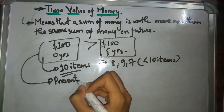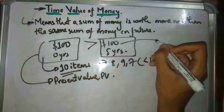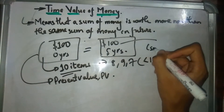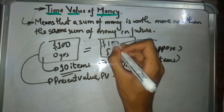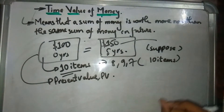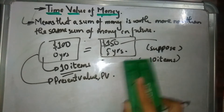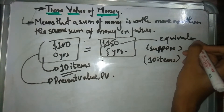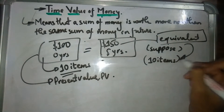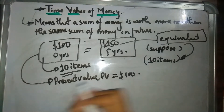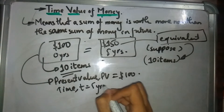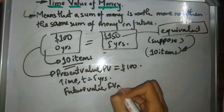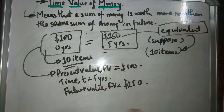At time t = 0, this is known as our present value, PV. In five years' time — let's suppose the $100 is going to be equal to $150, with which you can buy the same 10 items. They are not equal in dollar terms, but they are equivalent. So we can say the present value of $100 at t = 0 is equivalent to a future value, FV, of $150 at t = 5 years.